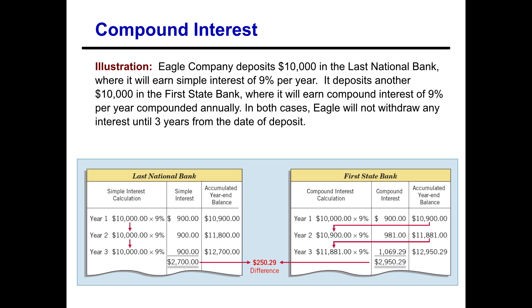By the end of year three they have over two hundred fifty dollars more under compound interest at First State Bank than under simple interest at Last National Bank.